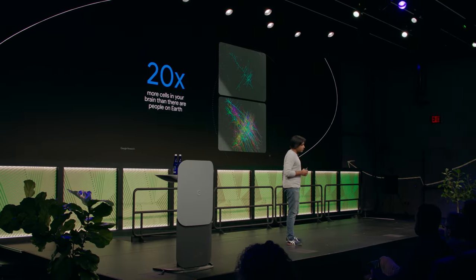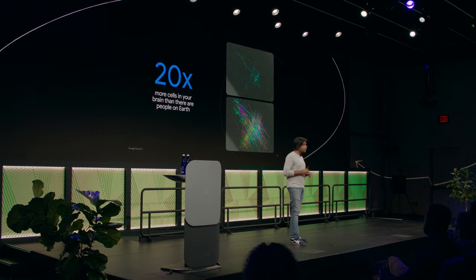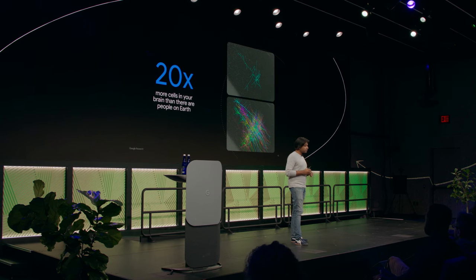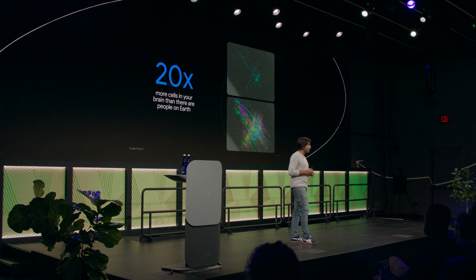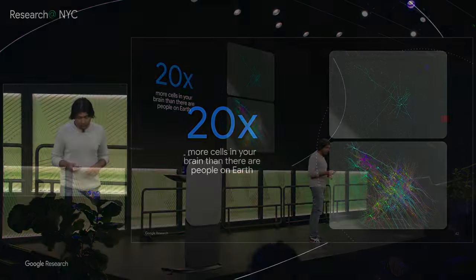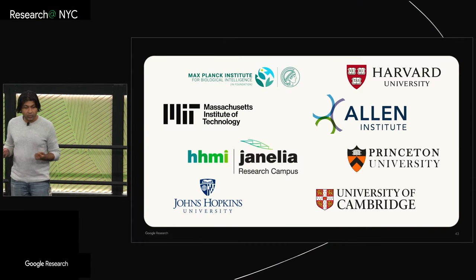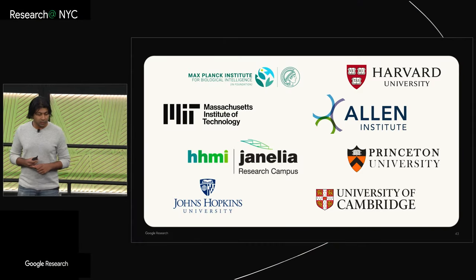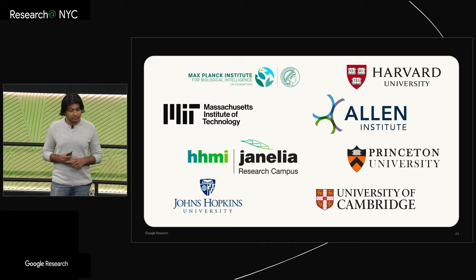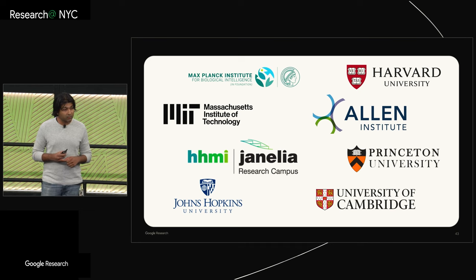Mapping the connectome is one of the grand challenges in science, and one that Google Research is uniquely well-suited to tackle. Google has a long history of mapping things. Search was all about mapping the web. Maps was about mapping the earth. Now we're using our suite of advances in computer science and software to make a map of the brain. We're very lucky to have an amazing set of collaborators from other institutions to share this mission.